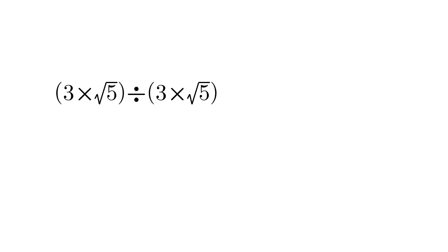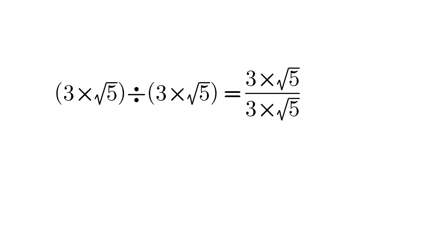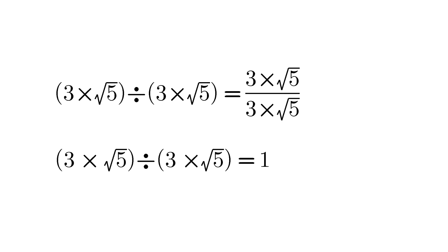Consider 3 into root 5, divided by 3 into root 5. According to the modern order of operations, we first do operations inside parentheses, then do division. So we get: (3 × √5) ÷ (3 × √5) = 1.